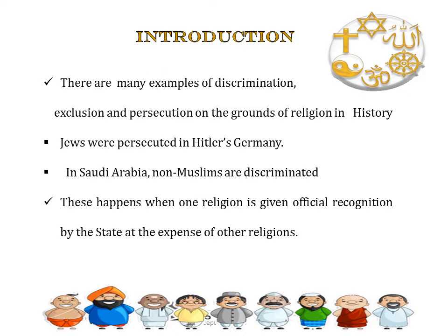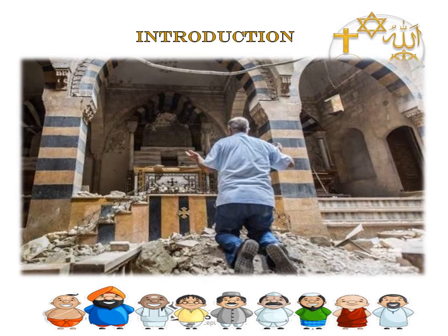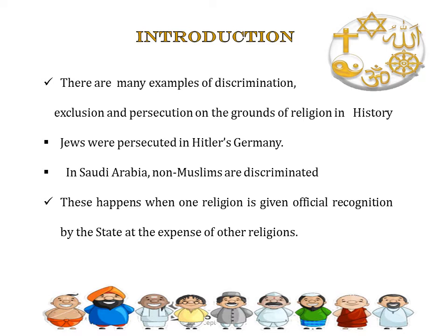History provides many examples of discrimination, exclusion, and persecution on the ground of religion. For example, Jews were persecuted in Hitler's time and several millions were killed. Similarly, in Saudi Arabia, non-Muslims are not allowed to build a temple or a church — if they do so, those places will be destroyed — and they cannot even gather in a public place for prayers. In all these examples, members of one religious community persecute or discriminate against members of other religious communities. These acts of discrimination take place only when one religion is given official recognition by the state at the expense of other religions.